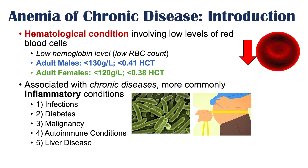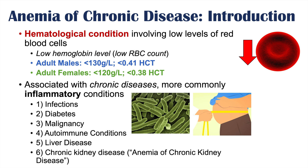Liver disease is another condition that might cause anemia of chronic disease. Kidney disease can also lead to an anemia, but if anemia is caused by chronic kidney disease, we refer to it specifically as anemia of chronic kidney disease, because the pathophysiology behind why it happens is slightly different from the other conditions mentioned.